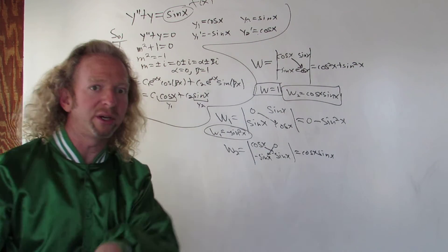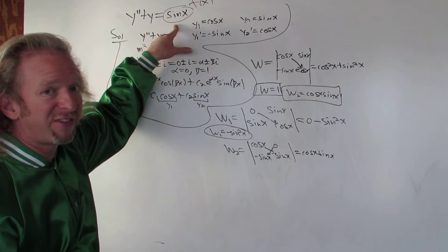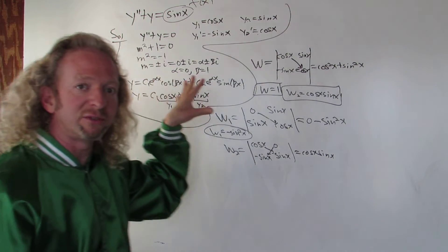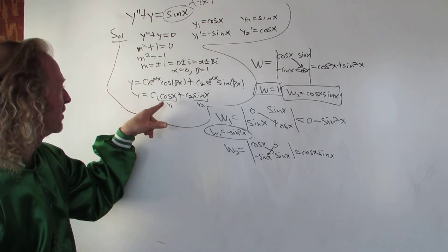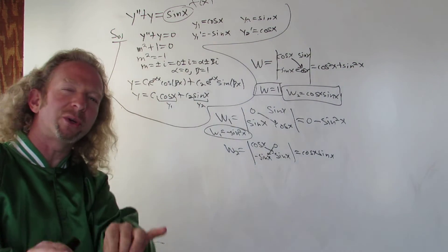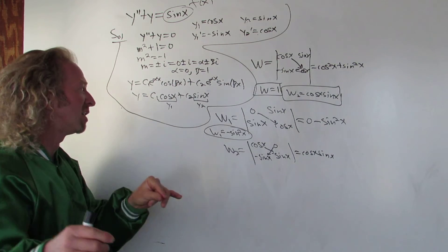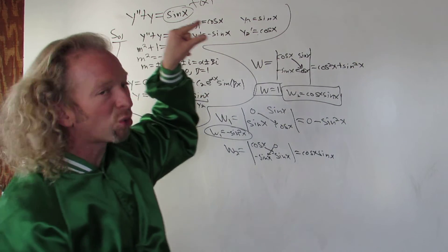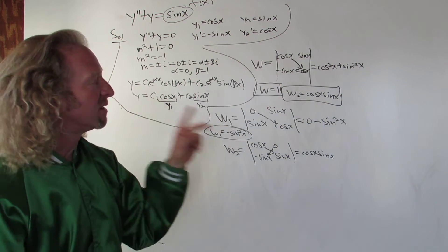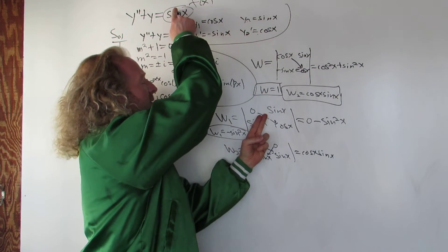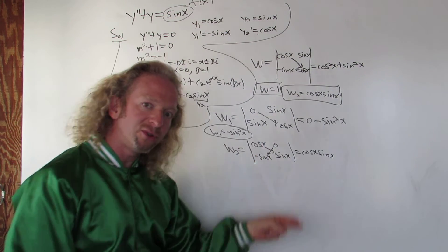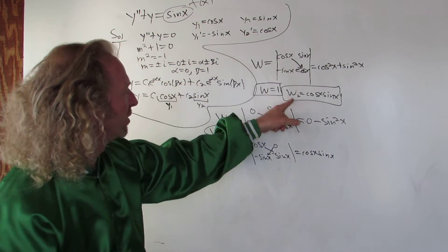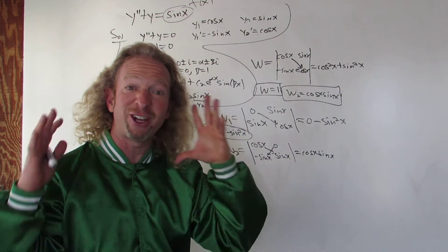Let me recap everything really quickly. Step 1, when you're using variation of parameters, you pretend it's equal to 0, you solve the homogeneous differential equation. This is your y1, this is your y2. It doesn't matter if you flip them. You'll still get the same answer at the very end. Find the Wronskian of those things. To find w1, you cover up the first column, replace it with 0 and f of x. To find w2, you cover up the second column, replace it with 0 and f of x. So you have w, w1, w2.